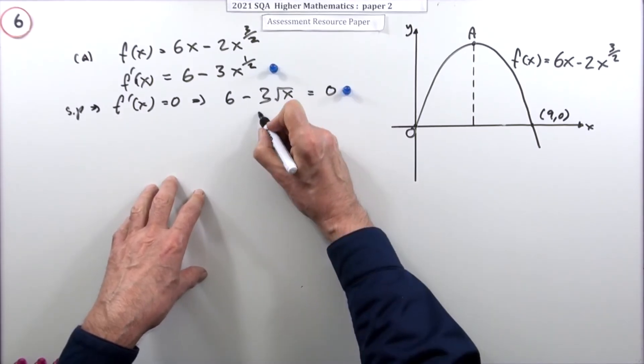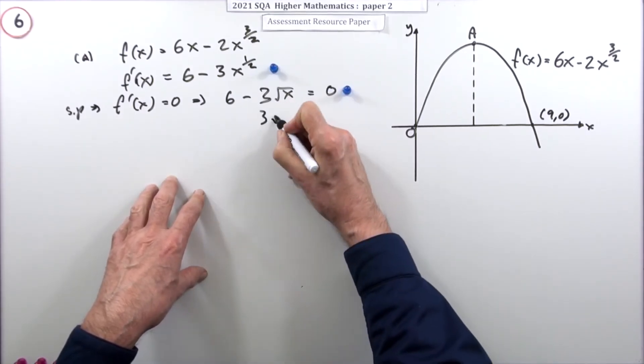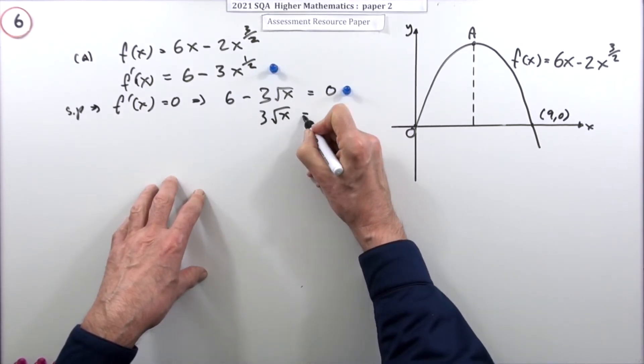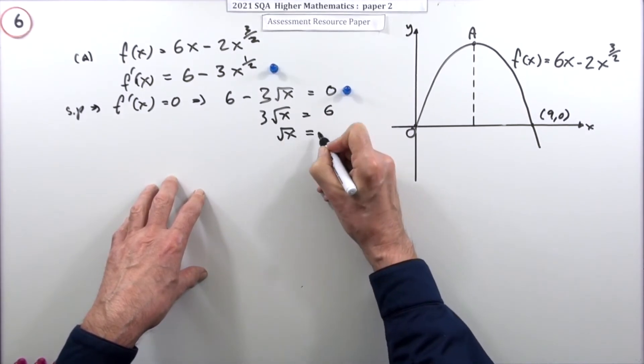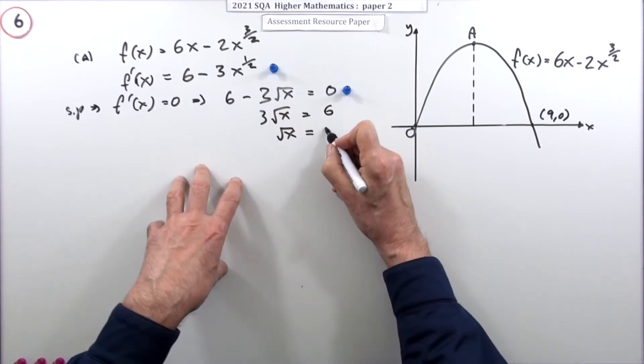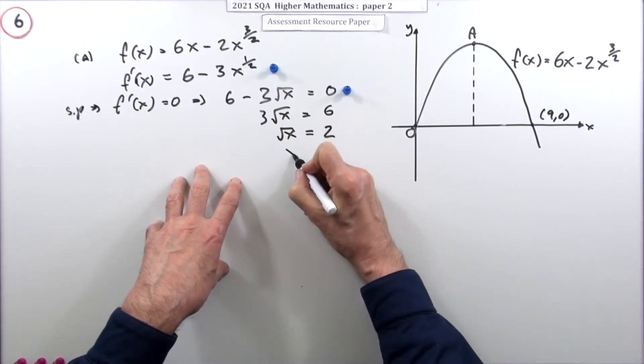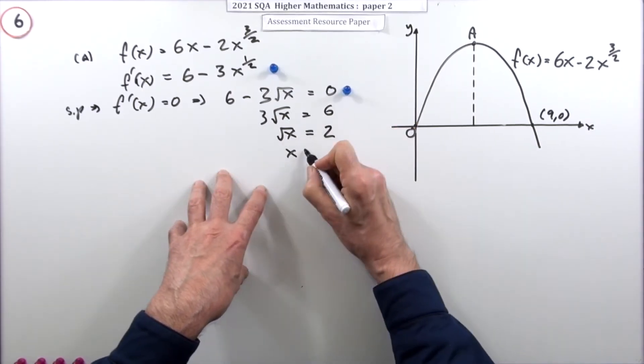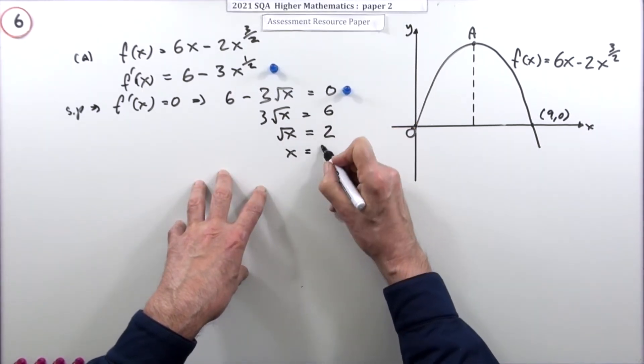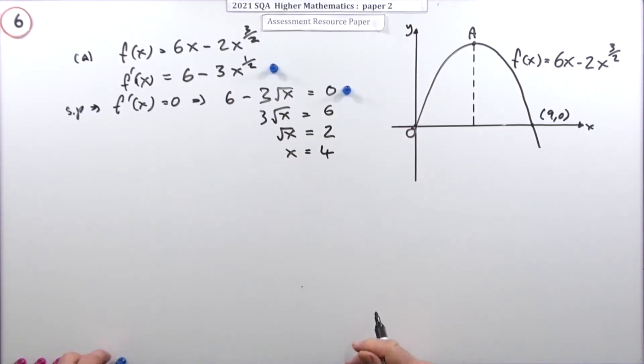Solving: 3√x = 6, so √x = 2. Squaring both sides gives x = 4.